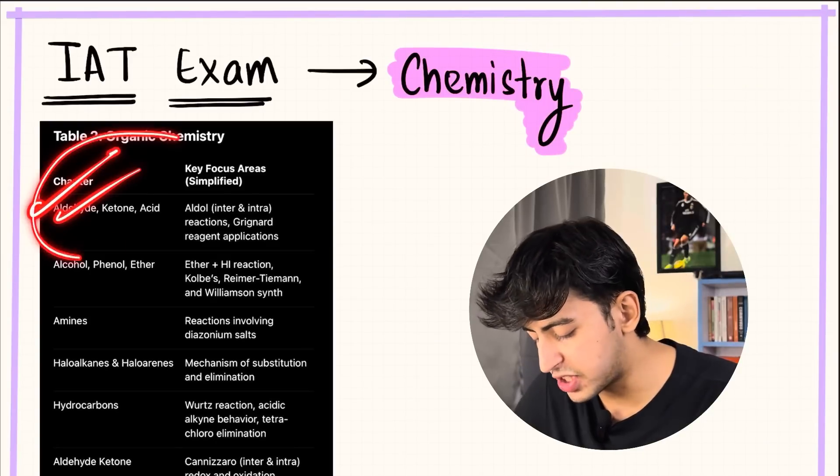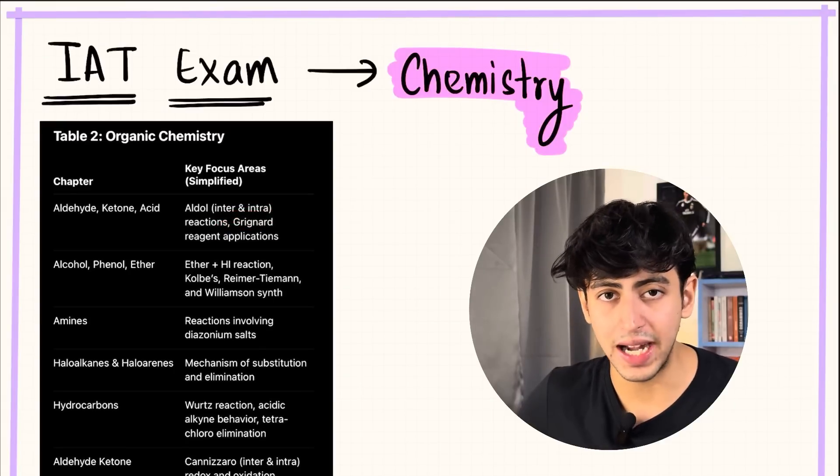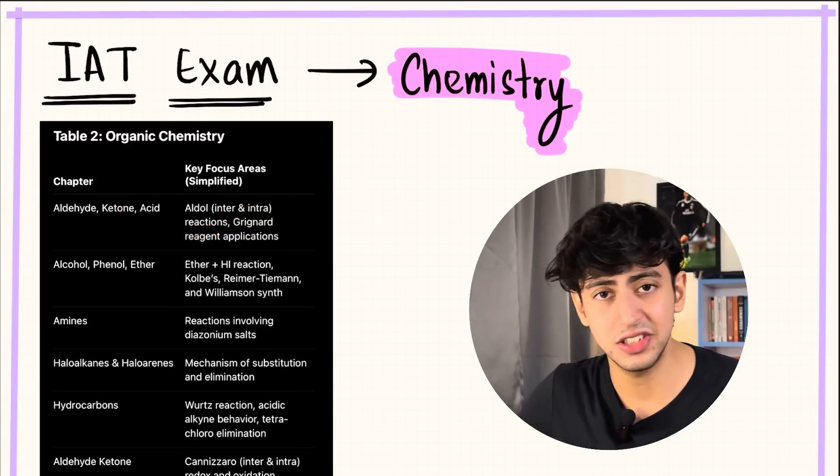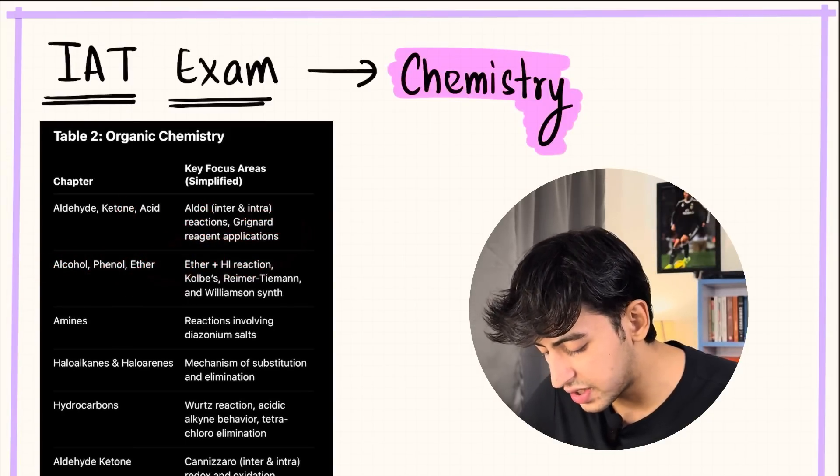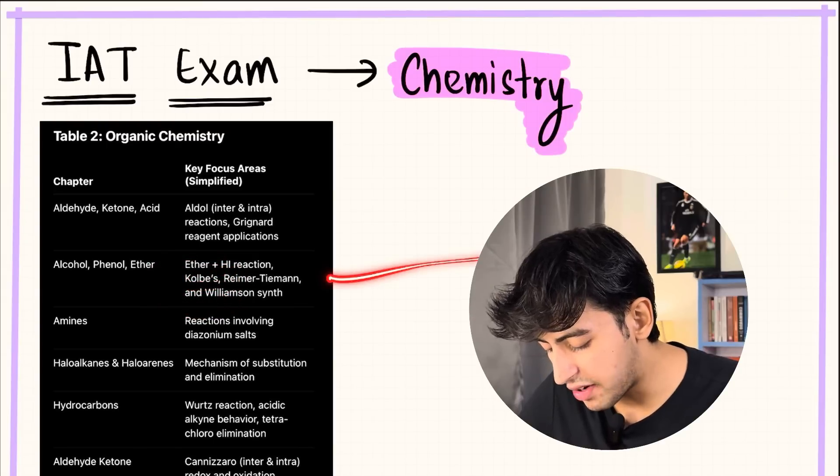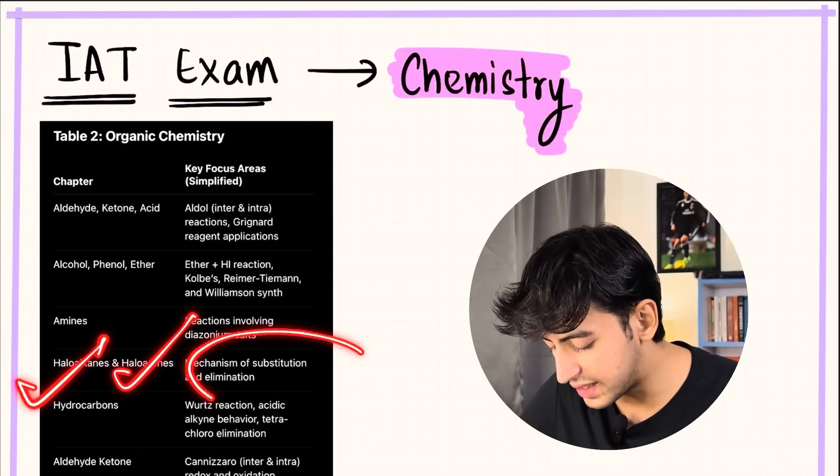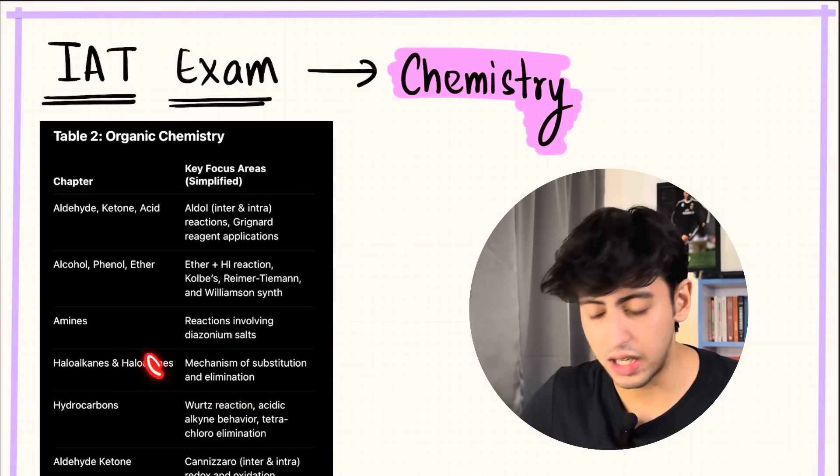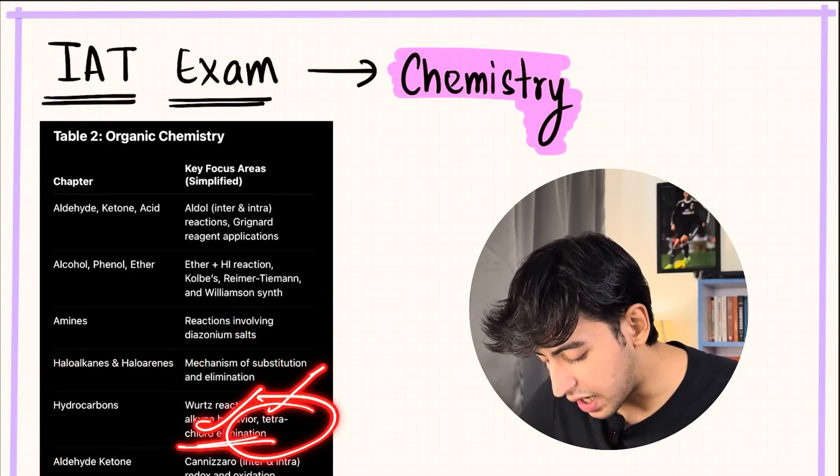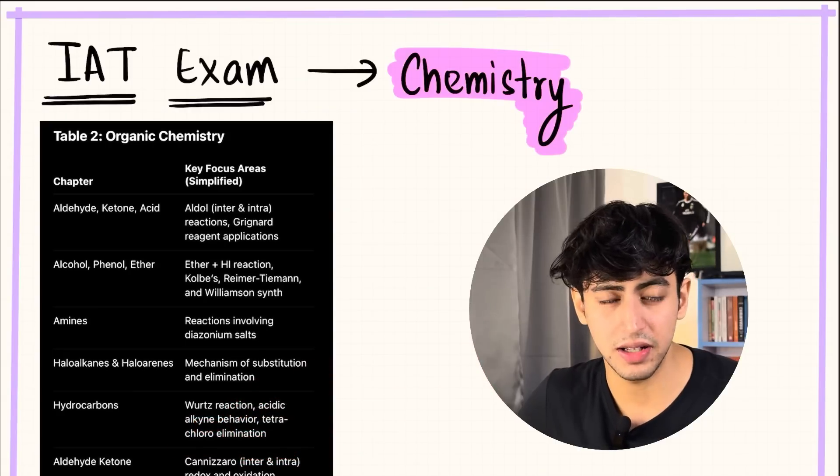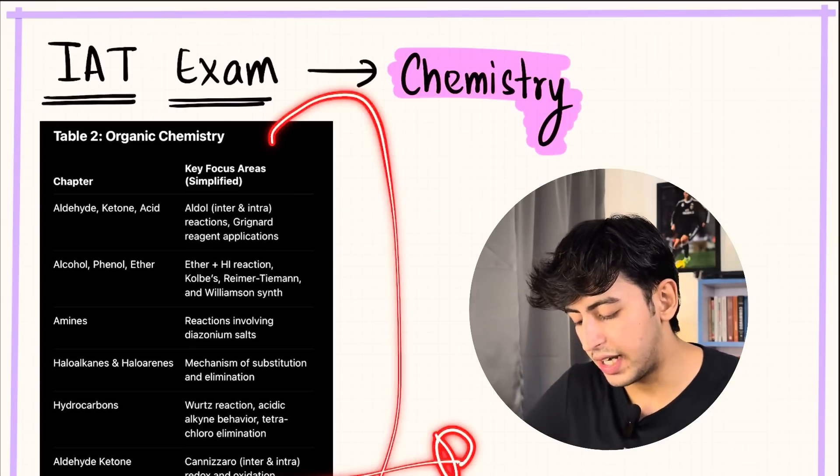Coming to the most repeated topics in organic chemistry: aldehyde ketone acid—you have aldol reaction questions which include both inter-aldol and intra-aldol. In aldehyde ketone, reactions and applications are very important. In alcohol phenol ether you have ether plus HI reactions, Kolbe's electrolysis, Reimer-Tiemann reaction and Williamson synthesis. In amines you have reactions involving diazonium salts. Haloalkanes and haloarenes—you have mechanism of substitution and elimination, this is most important. In hydrocarbons you have Wurtz reaction, acidic alkyne behavior and tetrachloride elimination. These questions are repeated every time. And then in aldehydes again, Cannizzaro reaction and redox oxidation reactions. So you have to study these things in organic—they have a lot of probability.